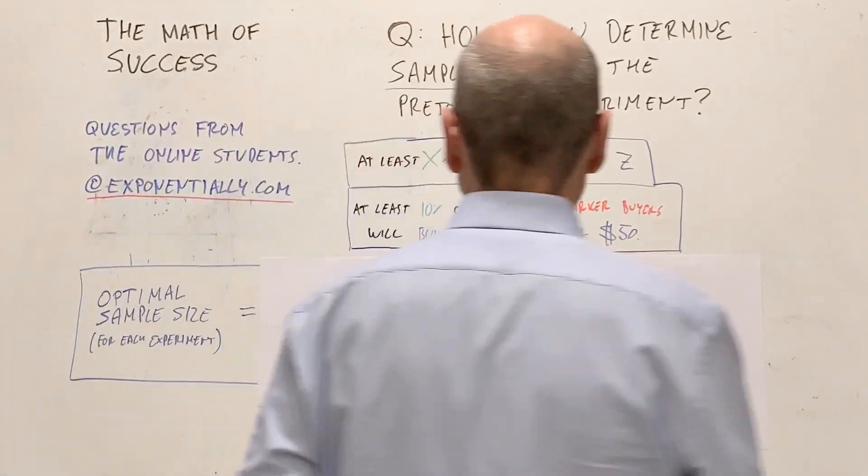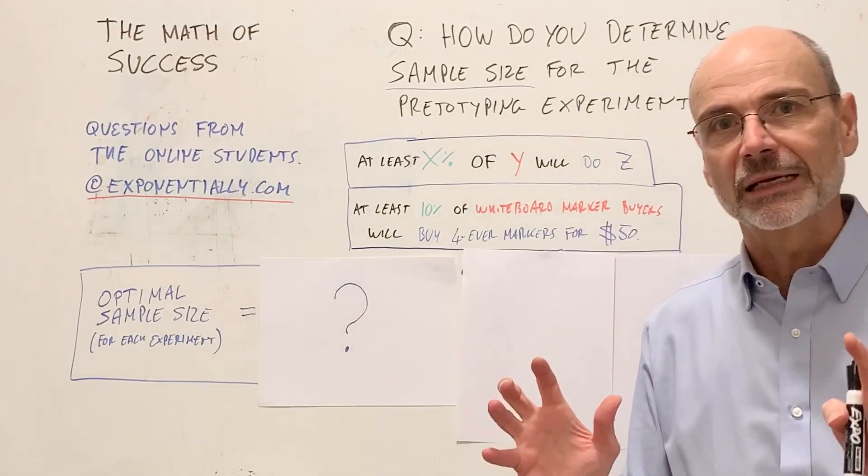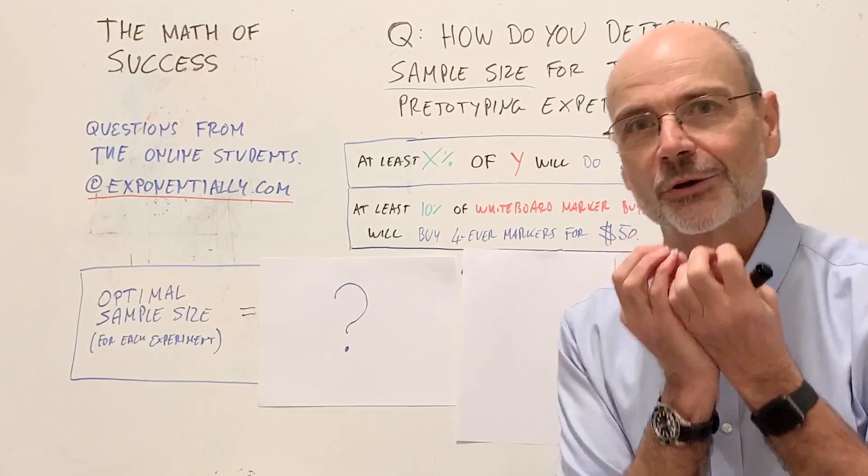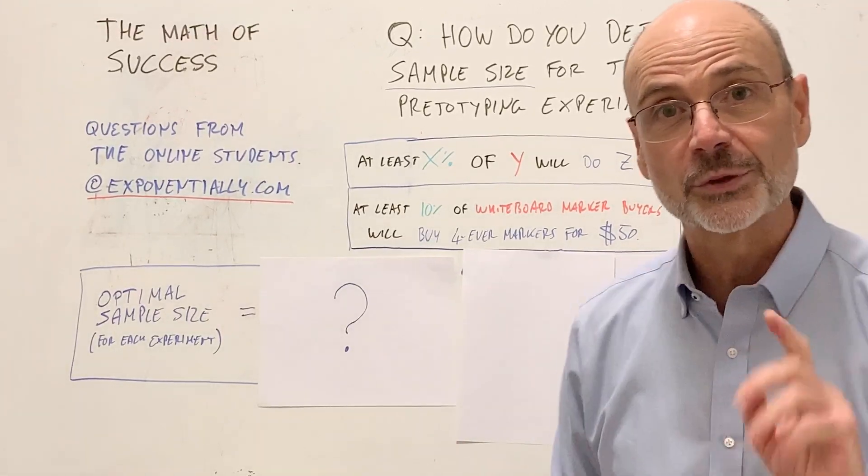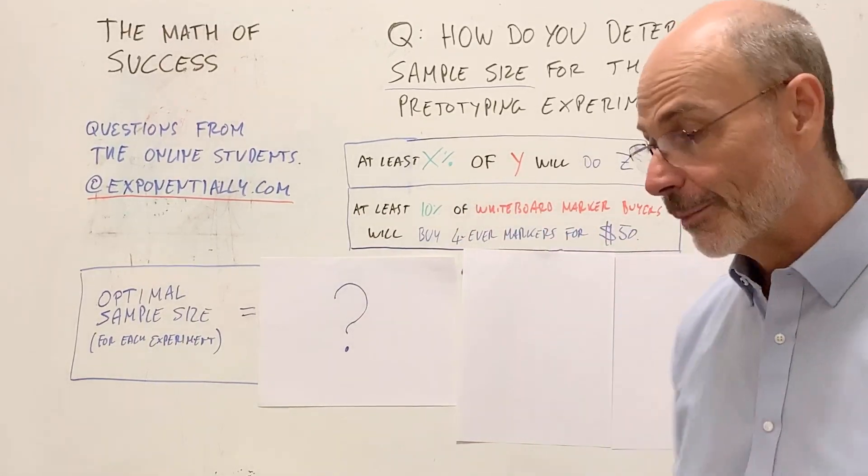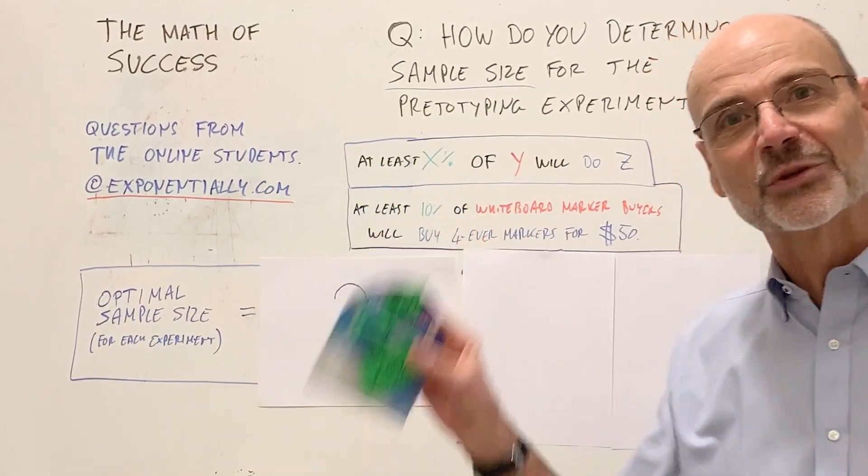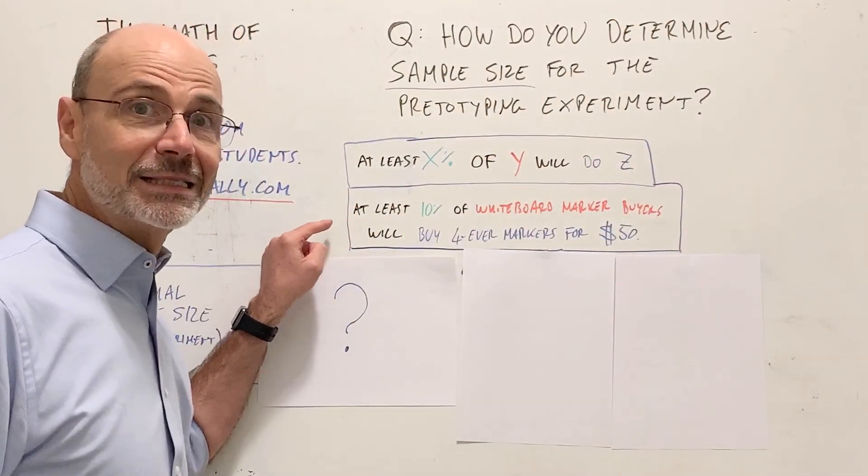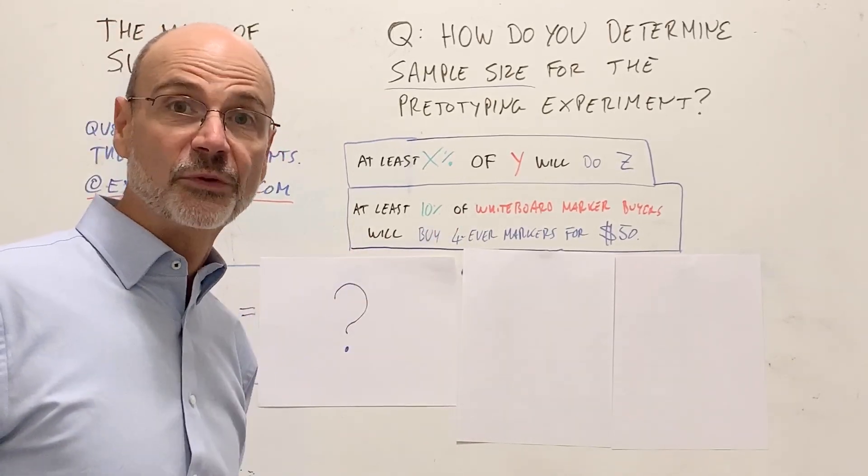So, first of all, remember, always start with the XYZ hypothesis. It's the most important thing that I teach. It's fundamental. It's the one that crystallizes your thinking and your idea and allows you to say it with numbers and collect data. Remember, the format for the XYZ hypothesis is at least X percent of Y will do Z. So in my example, for the forever markers that cost $50, 10 times more than the regular markers, my hypothesis is this: At least 10 percent of whiteboard marker buyers will buy forever markers for $50.